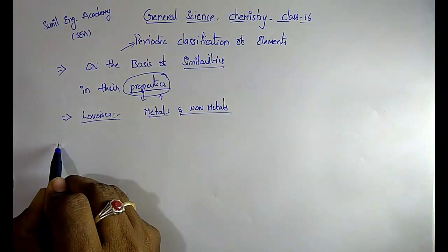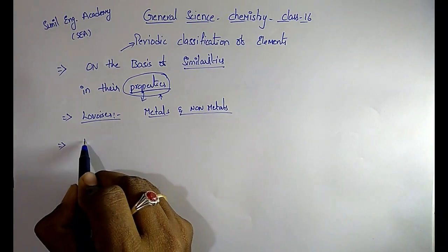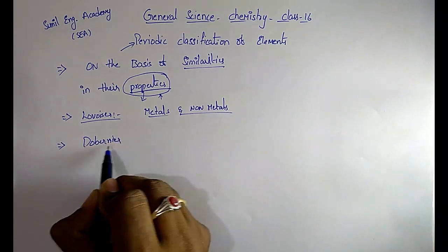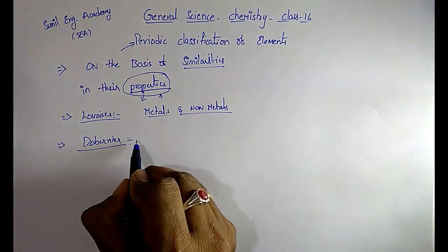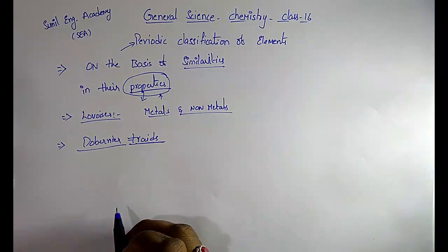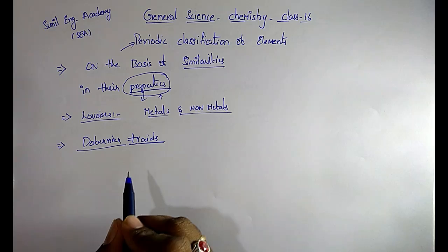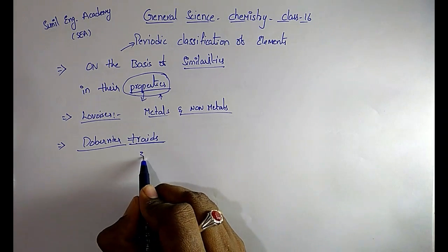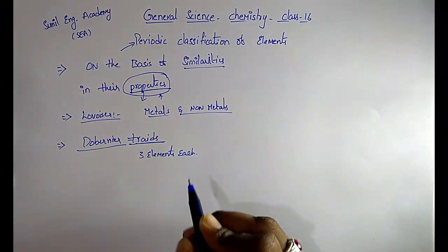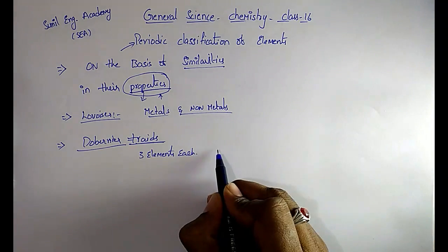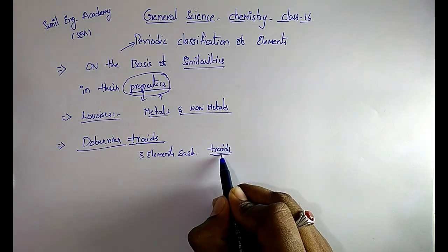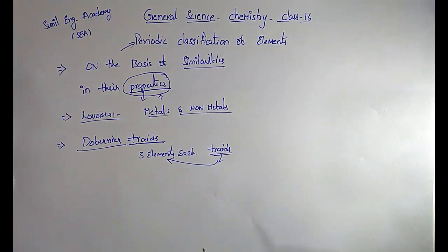After Lavoisier, the second one is Dobereiner. His theory is also called Dobereiner's Triads. He identified that some groups have three elements each, and he called them as triads. That means each triad has three elements in it.